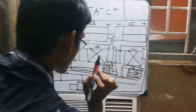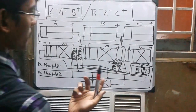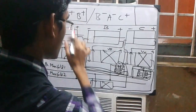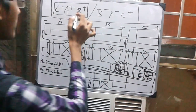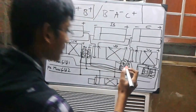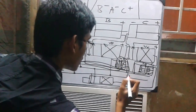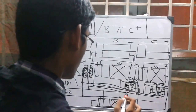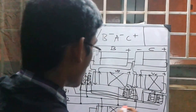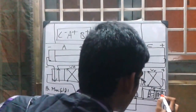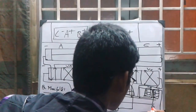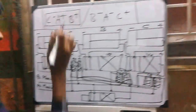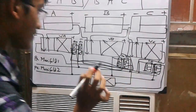Next we move to B naught: it is already complete. For B1, which is B positive, we take the connection from B positive and connect it to group 1 where it actually belongs. For C1, which is C plus, one end is connected but the other end is not. C1 belongs to the second group, so we connect it to pressure manifold 2. After checking all connections, the diagram is complete.